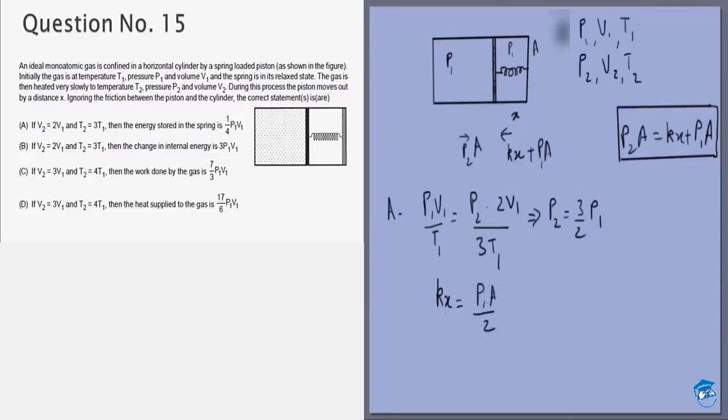So this gives me Kx is equal to P2 minus P1, that is half of P1 times A. P1A by 2. I multiply both sides by x. I multiply both sides by half because we need the energy stored in the spring, that is half Kx square, that is equal to P1Ax by 4. What is Ax? That is the change in volume. Let's say the piston initially was here and finally is compressed distance x, so the piston has moved. So P1Ax by 4, Ax will be the change in volume, that is final volume minus initial volume. So that will be 2V1 minus V1. So this will be equal to V1, which means 1 by 4 P1V1 is the energy stored in this spring. So the first option is correct.